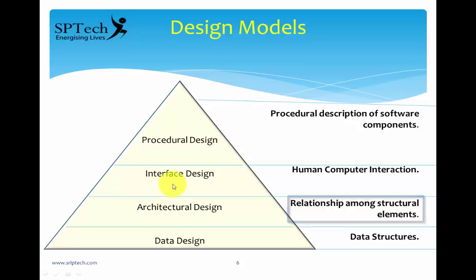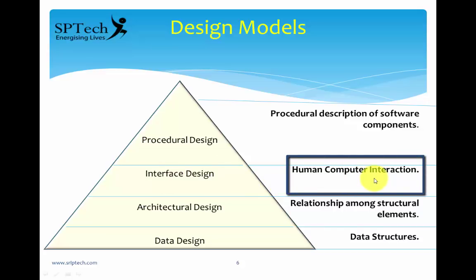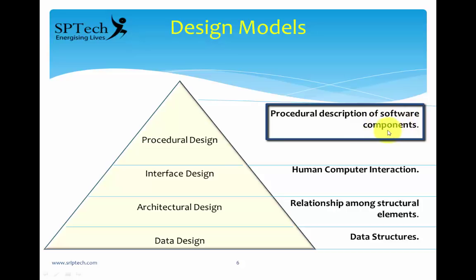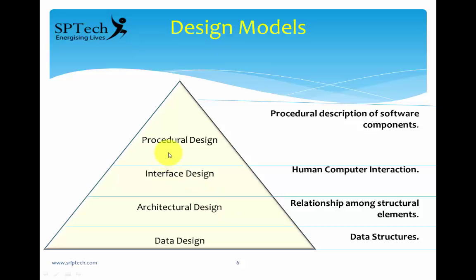Then you have interface design, which talks about human-computer interaction — how an end user interacts with the system, what screens they access, how hardware interfaces with the software, and the kinds of interaction between the user, hardware, and software. Finally, you have procedural design, which gives the procedural description of the software components. While architectural design gives the subsystems, procedural design tells you how data is flowing between subsystems — it can be implemented using data flow diagrams and structure charts.